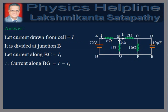Now for the answer. Let us name the network ABCDEFGH as shown in the figure. Let the current drawn from the cell be equal to I. It is divided at junction B. Let the current along BC be equal to I1; then current along BG is equal to I minus I1.